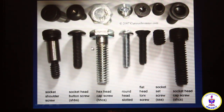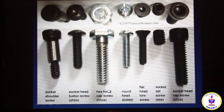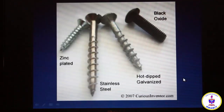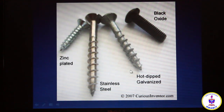Some other screw threads which are rarely used but are important for specific applications include shoulder screw, hex head, round head, flat head, socket set, and socket head. A few other screw threads exist for different materials, such as zinc plated stainless steel, hot dip galvanized, and black oxide with high carbon.